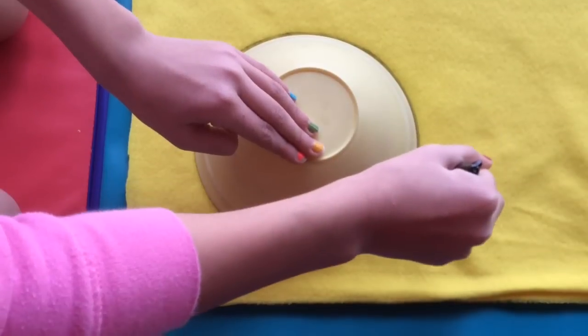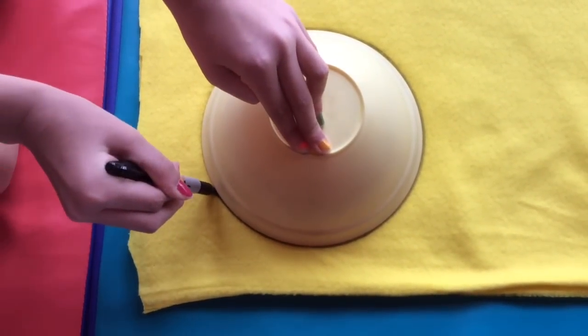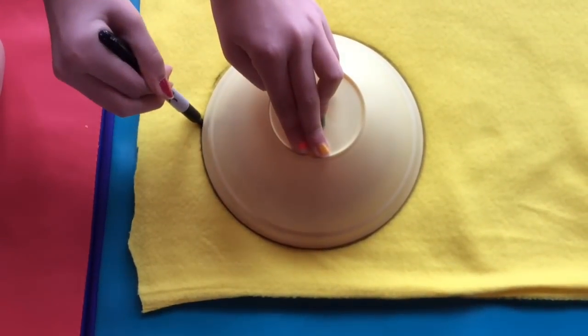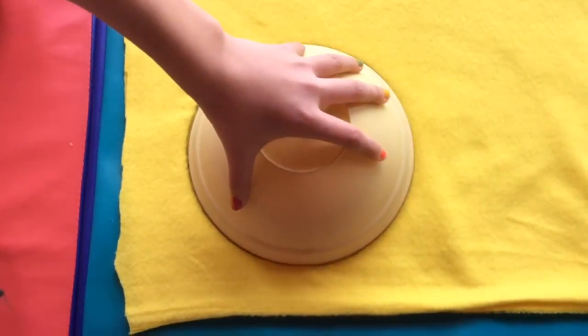And you have to make sure that your fabric is doubled up. And if you want a huge emoji, you should have a huge circular object. Or if you want a tiny emoji, you should use a small circular object.